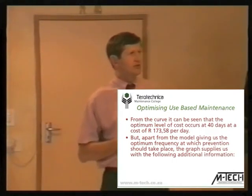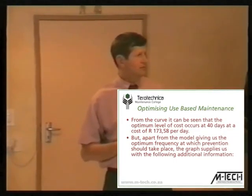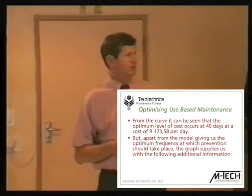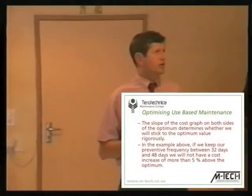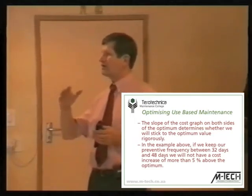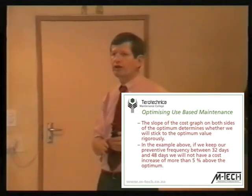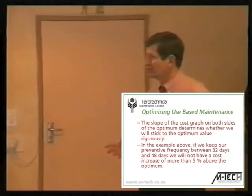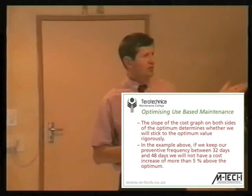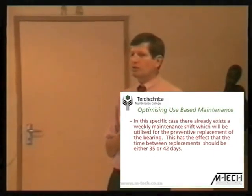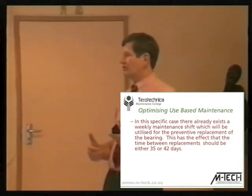From the curve it can be seen that the optimal level of cost occurs at 40 days at 173 Rand per day. Apart from giving the optimal frequency, the slope of the cost graph on both sides of the optimum determines whether we will stick to that optimum rigorously. We would typically add 5% to that cost, draw a line through there, and then have two boundaries within which we want to stay. The 5% is just a suggested figure — it might be 1% or 10% depending on the situation. In this case with 5%, we should keep between 32 days and 48 days to remain within that tolerance.